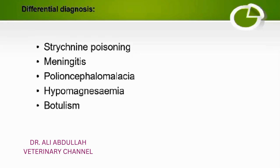In hypomagnesemia, you will find a history of lush green pasture feeding, because lush green pasture lacks magnesium, causing grass tetanus. Finally, botulism also causes paralysis, but that paralysis is flaccid in nature, not spastic. This is how you differentiate tetanus from botulism — botulism causes flaccid paralysis while tetanus causes spastic paralysis.